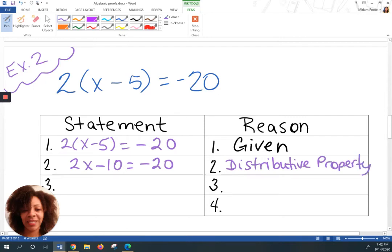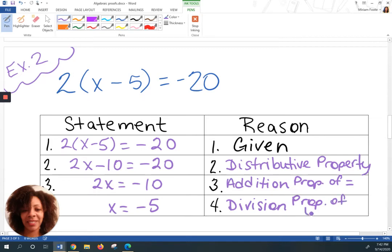The next thing I would do is add 10 on both sides, which would leave me with 2X is equal to negative 10. And what I am saying is the reason why I'm doing it. So addition property of equality. And then what would I do next? I would divide both sides by 2, which would result in X is equal to negative 5. And what did I say that I was going to do? I said divide, which is under division property of equality. So you can write the word out or you can abbreviate it. It depends on your teacher.